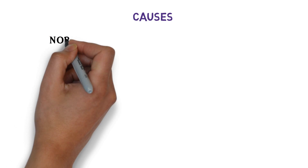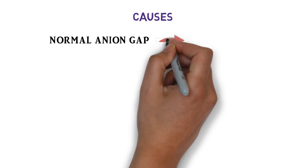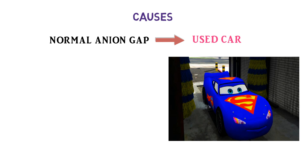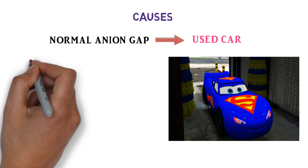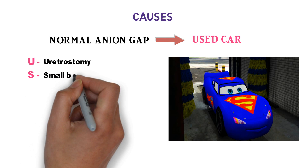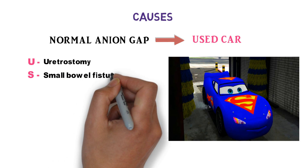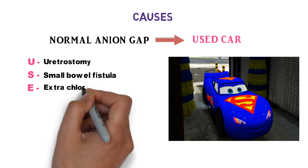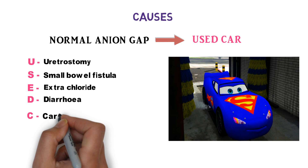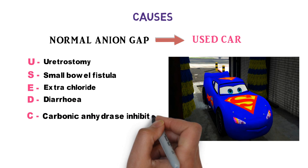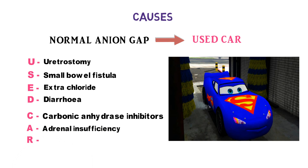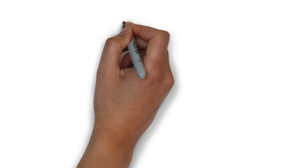Causes of normal anion gap acidosis can be remembered by the mnemonic USED CAR — this is the used car of that diabetic superman. U for ureterostomy, S for small bowel fistula, E for extra chloride, D for diarrhea, C for carbonic anhydrase inhibitors use, A for adrenal insufficiency, and R for renal tubular acidosis.